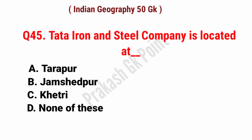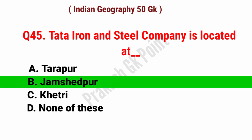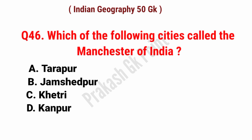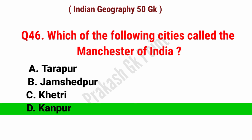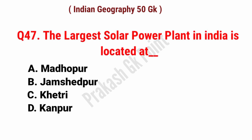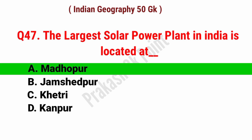Tata Iron and Steel Company is located at which place? Answer: option B, Jamshedpur. Which of the following cities is called the Manchester of India? Answer: option D, Kanpur City. The largest solar power plant in India is located at? Answer: option A, Madhapur.